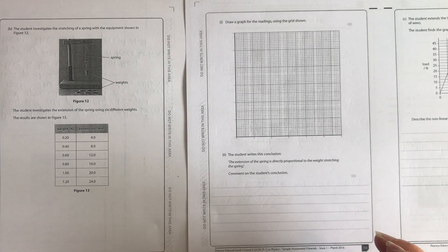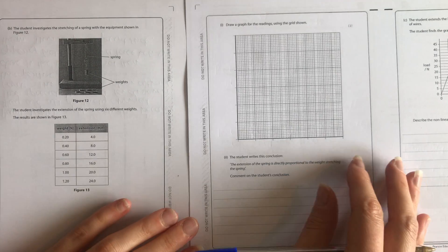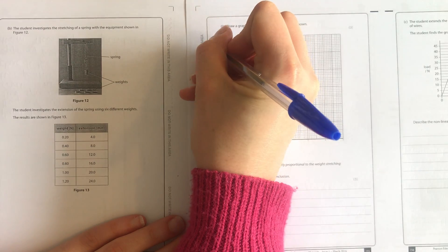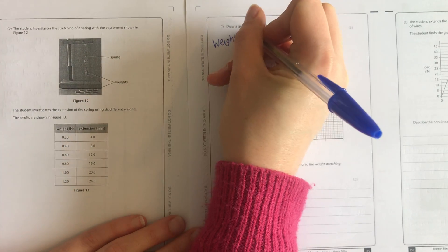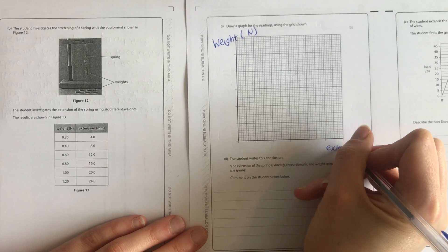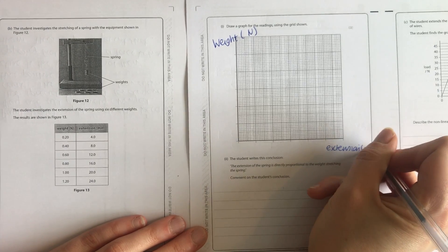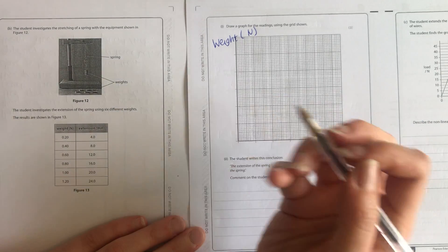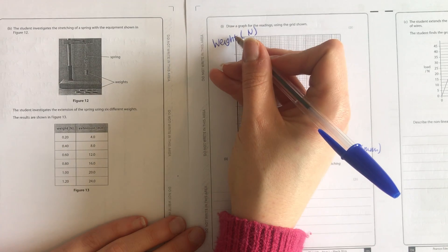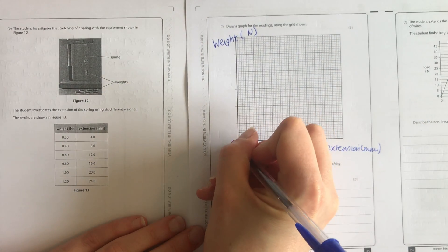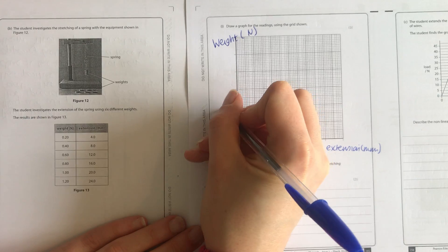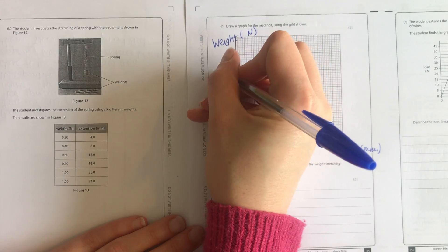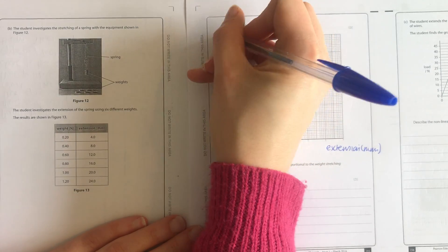For any of these questions, you always need to make sure you have a nice sensible scale that stretches across half the page. So it's going to be a force extension graph. I'm going to write weight up here, so I need to write the title weight in newtons and then extension in millimetres, and I must write those axes labels with the units. Now the weight goes up to 1.2, so I've got 1, 2, 3, 4, 5, 6. I've just got enough to say 0, 0.2, 0.4, 0.6, 0.8, 1, and 1.2.